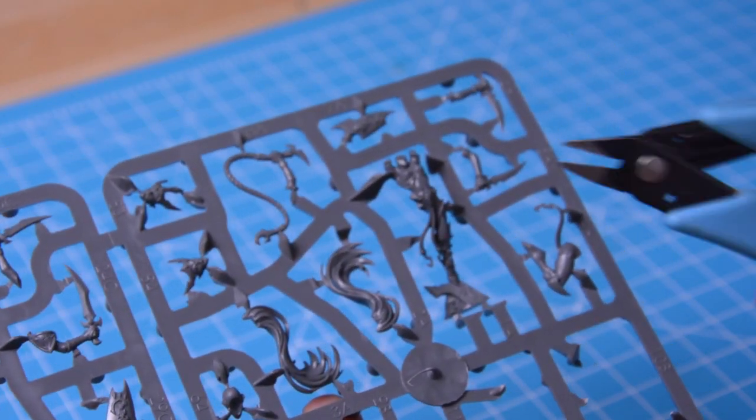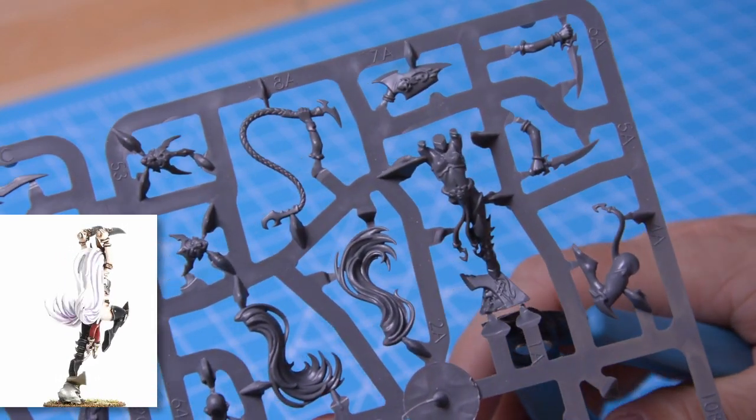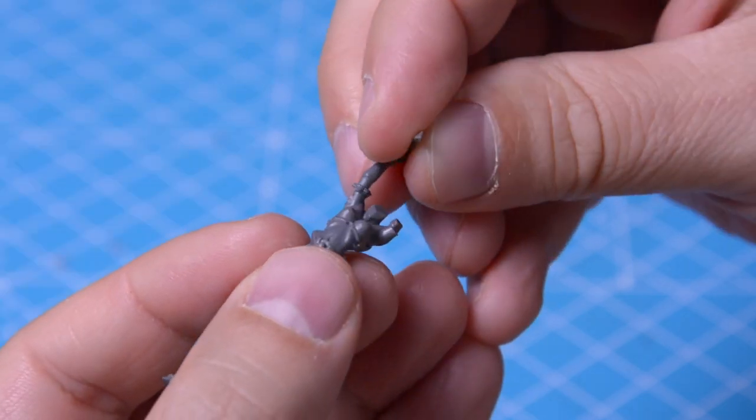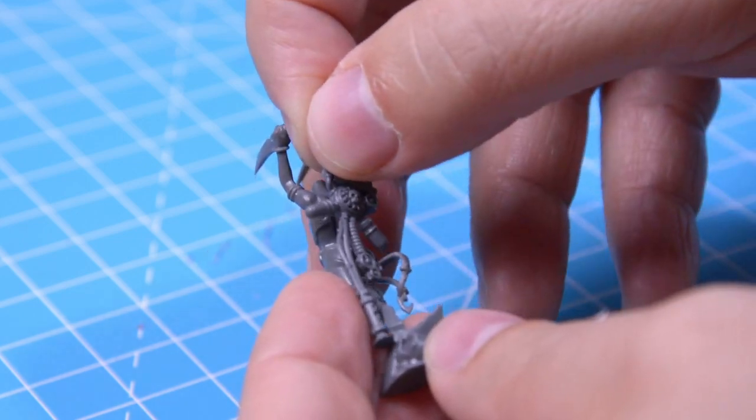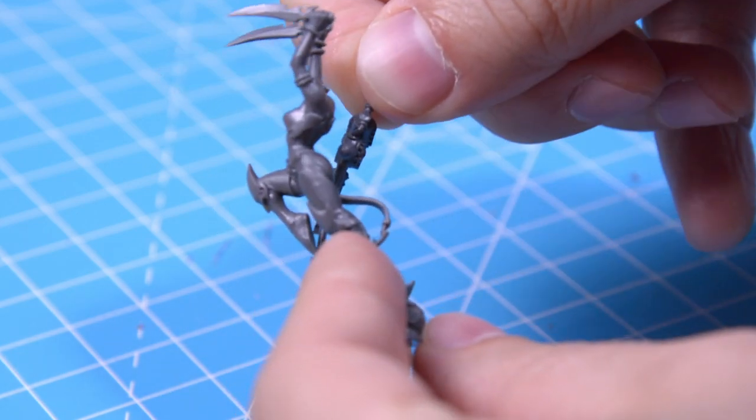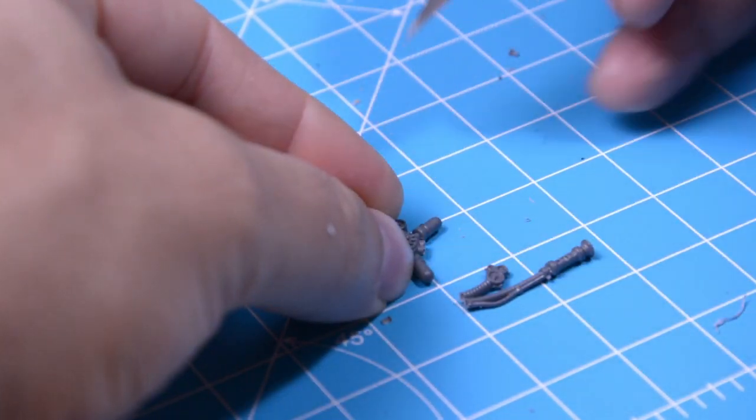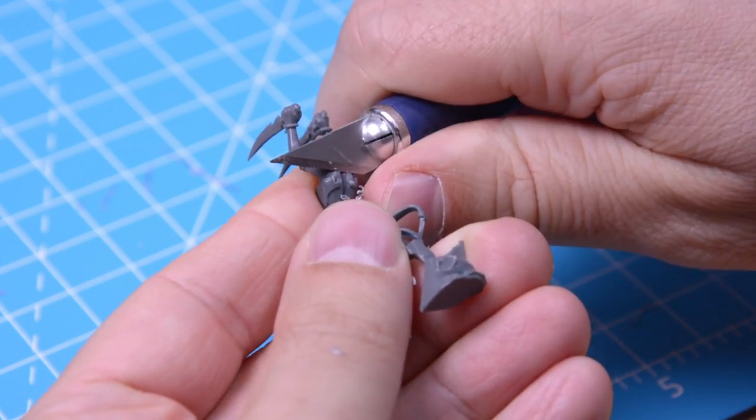This one is going to be a simple head swap. I start by cutting out the bits we need from the Witch Elves kit and assembling all the parts except for the head, which we don't need. This Skitari backpack looks like it'll fit her nicely and give the conversion a bit more of a futuristic flavour. I just have to trim off some of the cables, and I'll flatten her back so the backpack can sit flat.